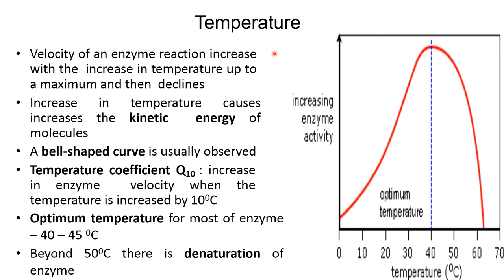Temperature: The velocity of enzyme reaction increases with increase in temperature up to a maximum and then declines. Increase in temperature causes increase in kinetic energy of the molecules. A bell-shaped curve is usually observed. Temperature coefficient Q10 is the increase in enzyme velocity when temperature is increased by 10 degrees centigrade. Optimum temperature for most enzymes is 40 to 45 degrees centigrade.